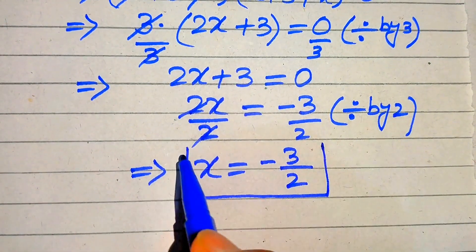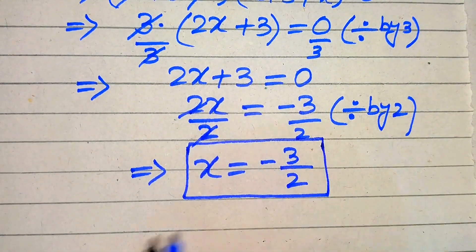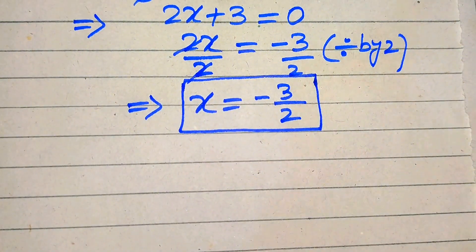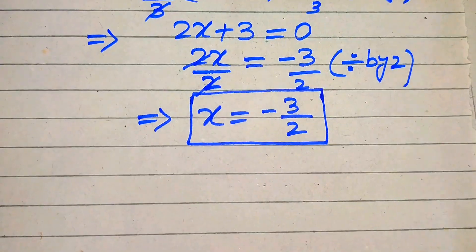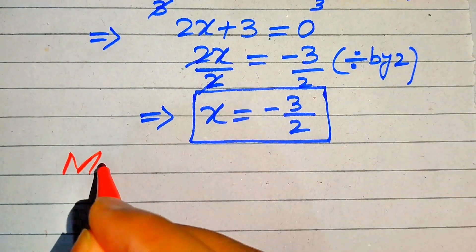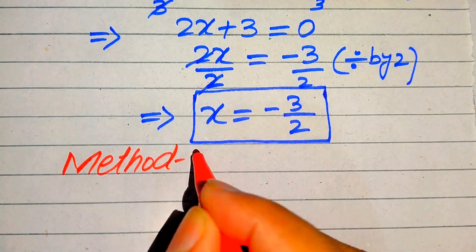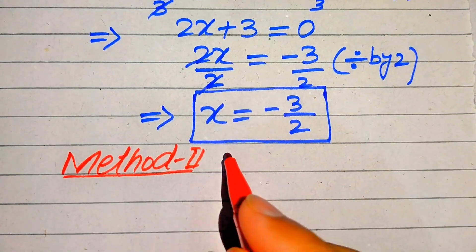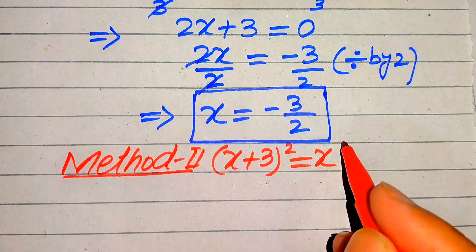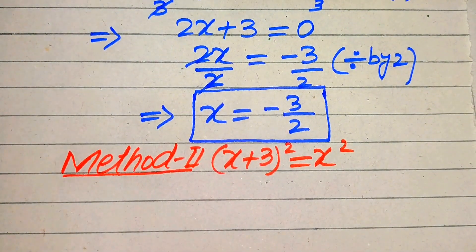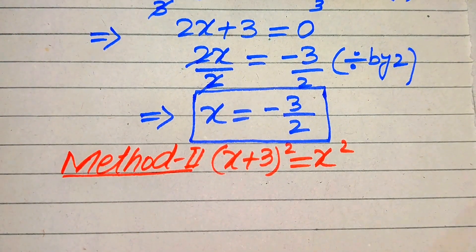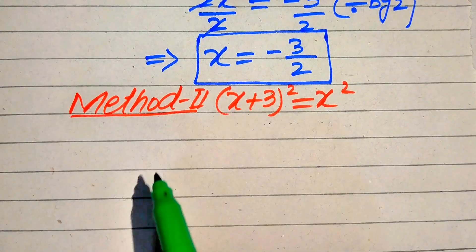So x = −3/2 is the final value of x from Method 1. Now in Method 2 we again start from our given question statement: (x + 3)² = x².